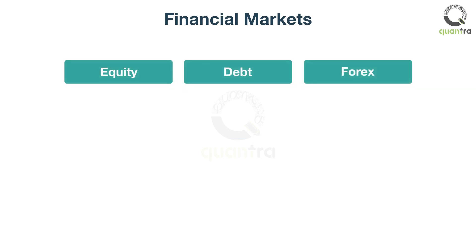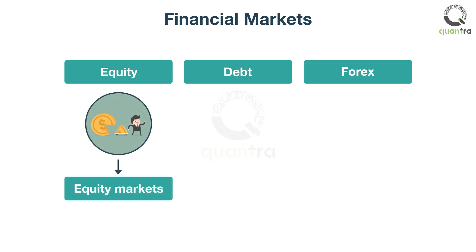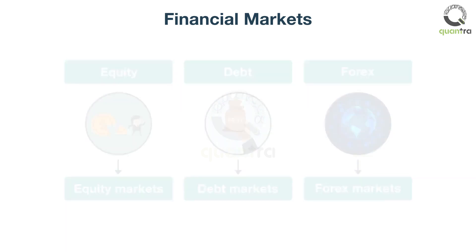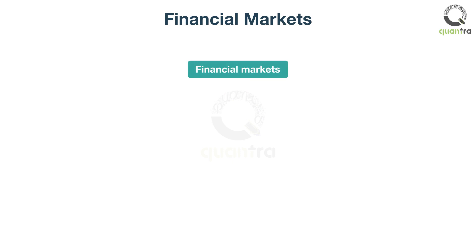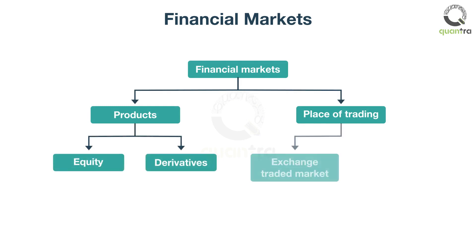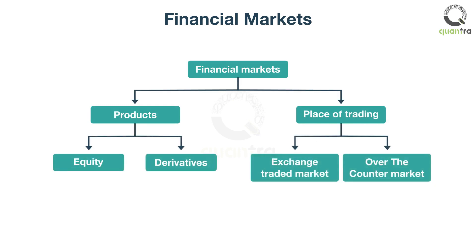Financial instruments can be broadly classified into equity-based, debt-based, and FX-based. Accordingly, the markets they trade in are referred to as equity markets, debt markets, and forex markets respectively. Such a classification is based on the assets that are traded. There are other ways to classify them, such as types of products, place of trading, etc. Further, they can be classified as the equity market and the derivatives market, and the exchange-traded market and the over-the-counter market.